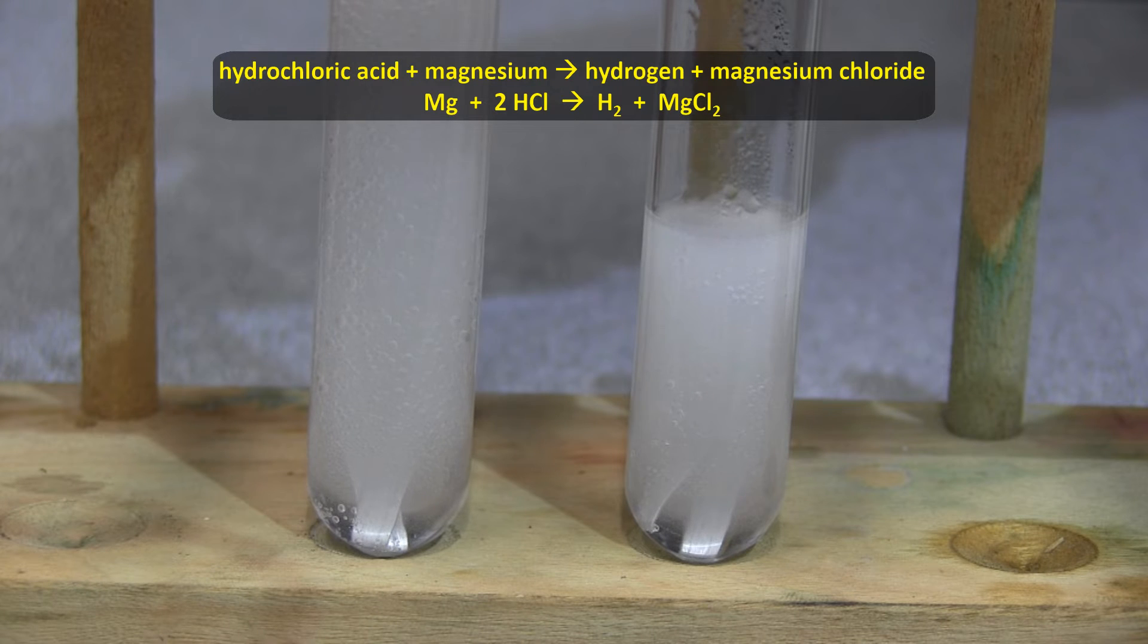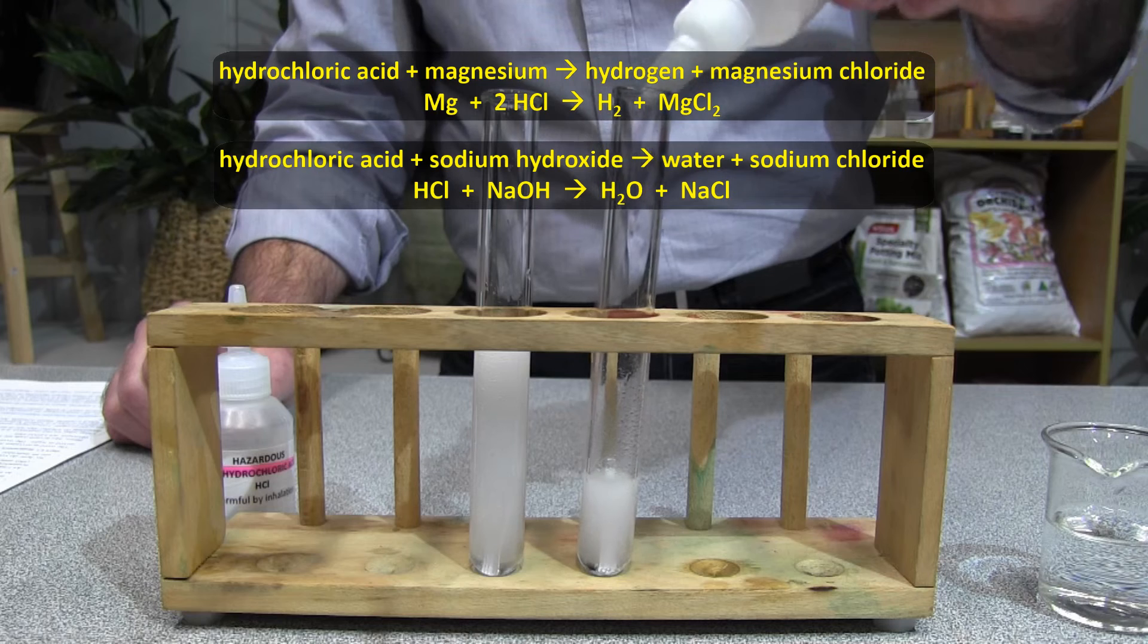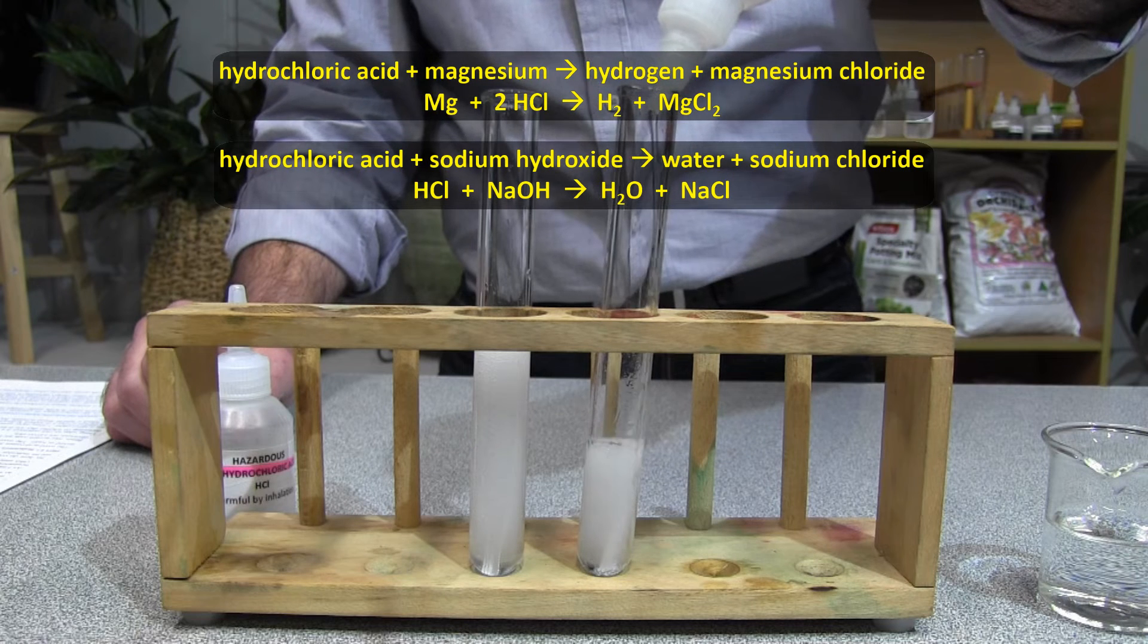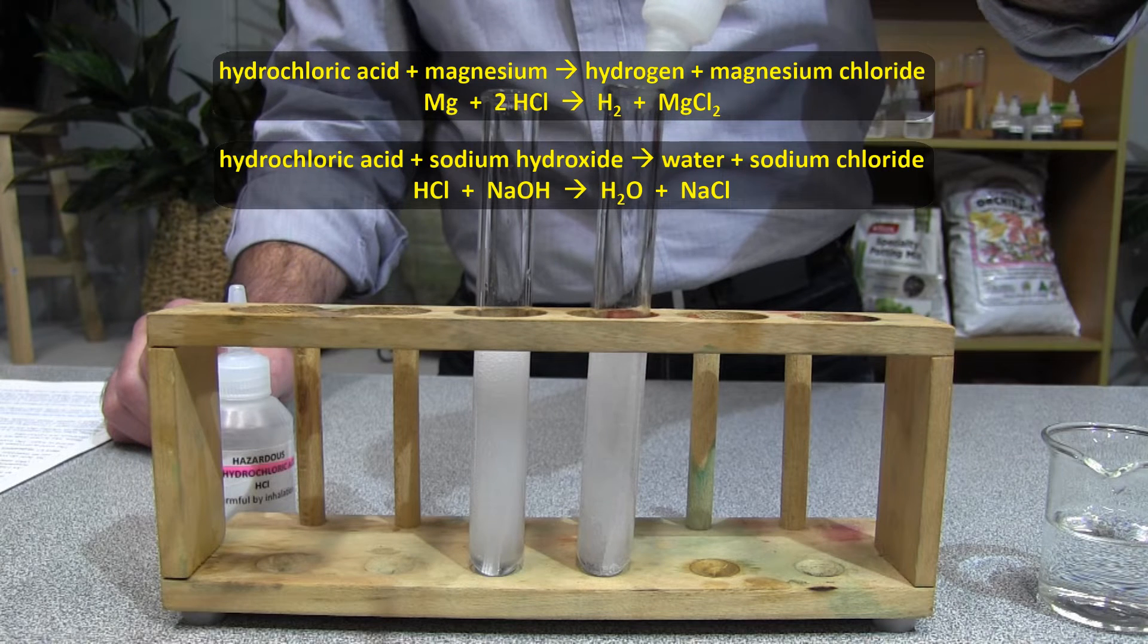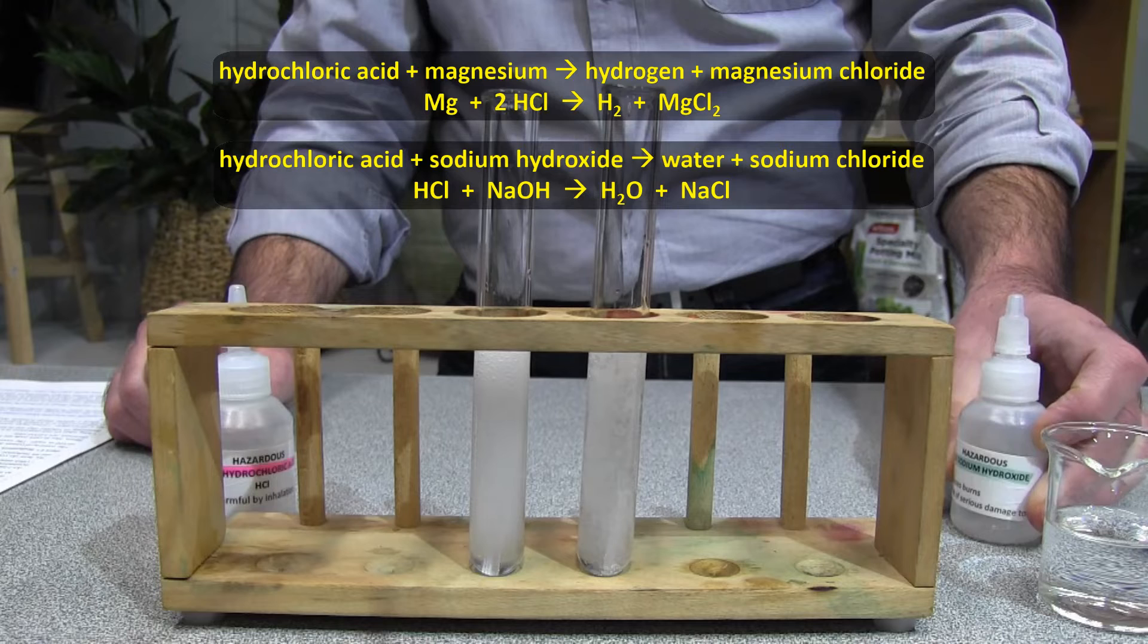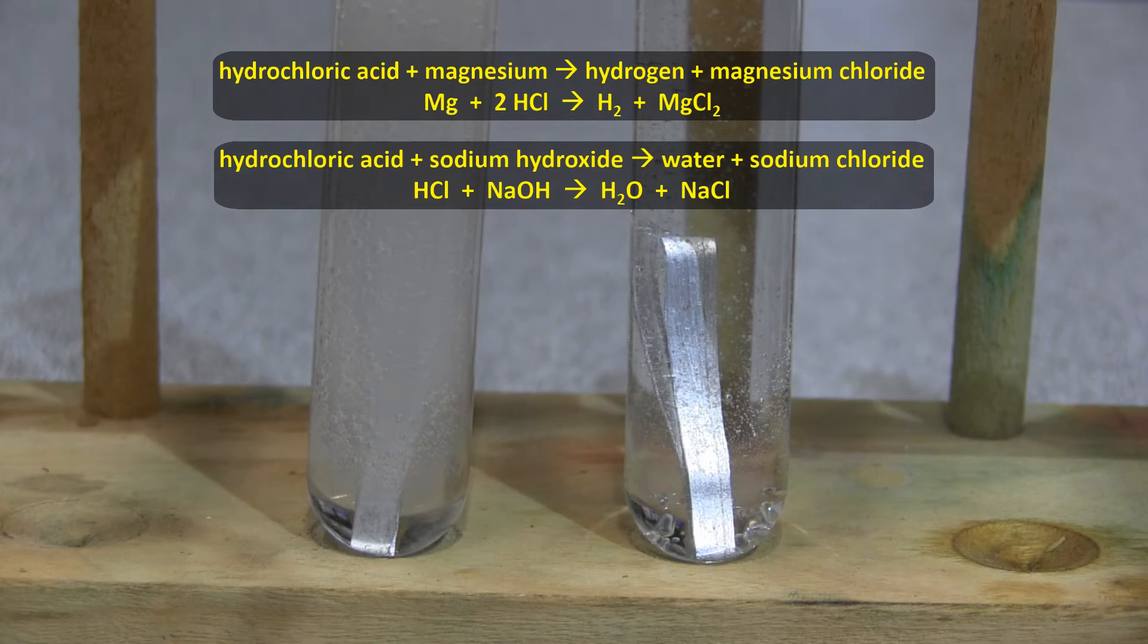Now, if I add some sodium hydroxide, a base, into the test tube on the right, the hydrochloric acid immediately reacts with it and water and sodium chloride are produced. The Mg is not producing bubbles anymore because there is literally no acid in the test tube anymore.